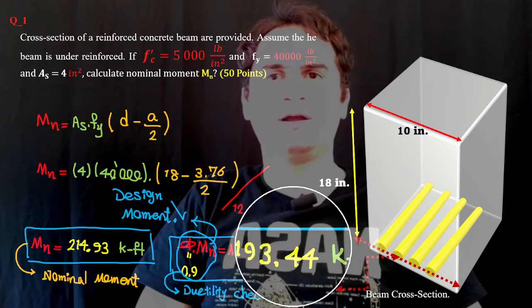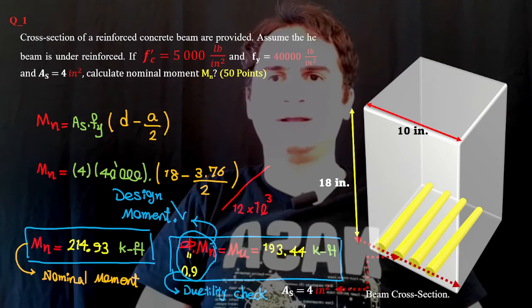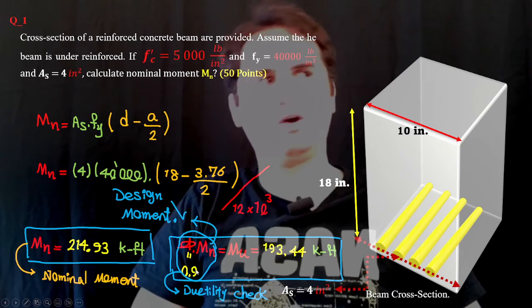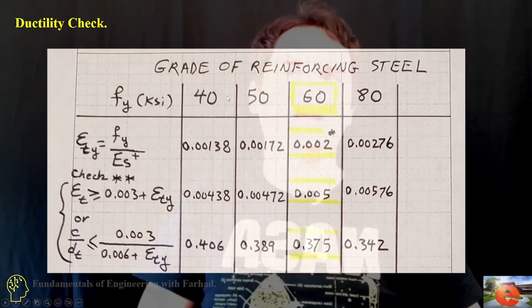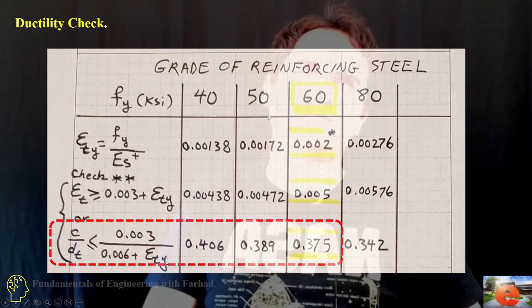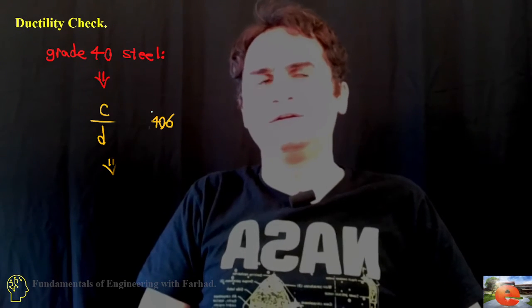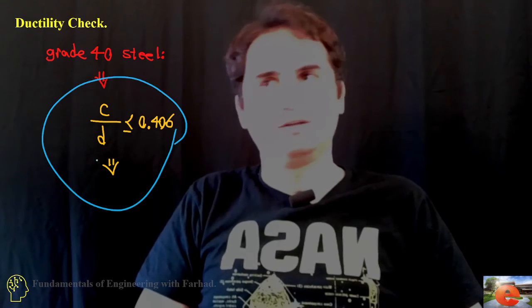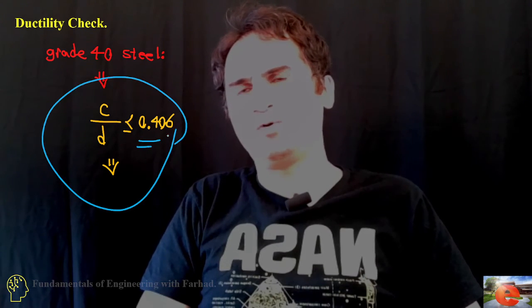We need to check the ductility of the section to see if we are allowed to use this phi or not. The last part in any concrete problem for grade 40 steel is we need to check the ductility.